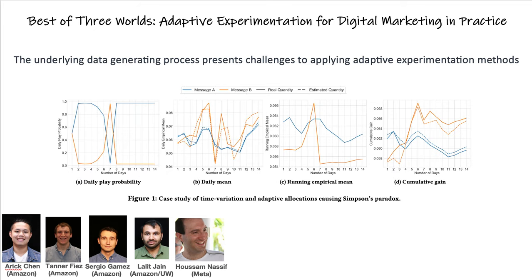The underlying data generation process of real-life data presents significant challenges to applying adaptive experimentation methods. In particular, methods that naively assume a stationary environment can spectacularly fail. In particular, we highlight in the paper that using Thompson sampling and inference based on the empirical mean can lead to faulty inferences.